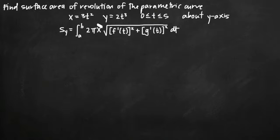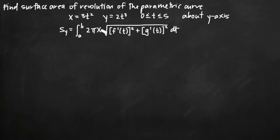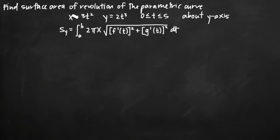We have this value x in our integral, which is the only variable that's not t. We'll pull x directly from the equation we've been given, which is 3t squared. If we were rotating around the x-axis, the formula would be exactly the same except we'd have y there, plugging in 2t cubed instead. But because we're rotating around the y-axis, we use x and pull it from our equation for x.